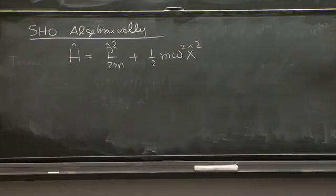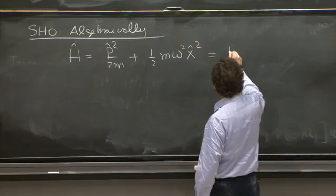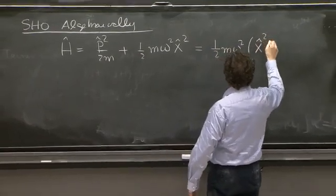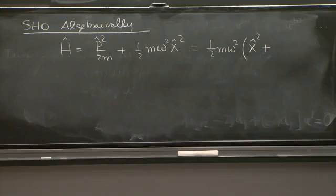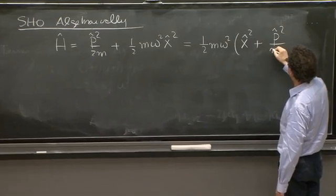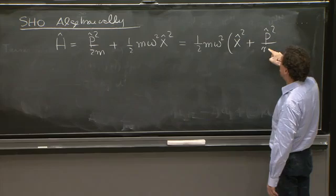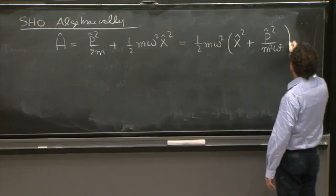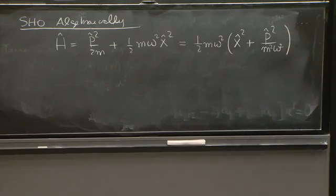p hat squared over 2m plus 1 half m omega squared x hat squared. And what we do is observe that this sum of squares plus p squared over m omega squared. So sum of two things squared.